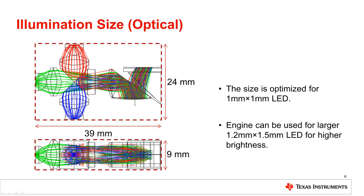The two views on this page show the optical size of the illumination: 39 mm by 24 mm with 9 mm height. To estimate the final engine size, one would need to add other necessary mechanical and electrical components. The size is optimized to achieve high efficiency for the 1 mm by 1 mm LED.